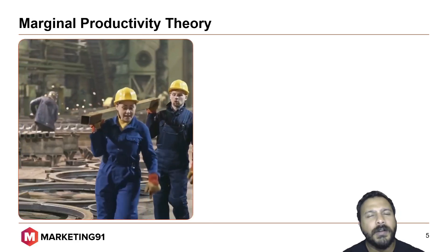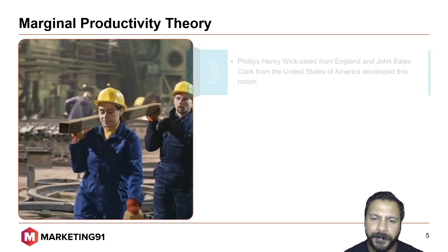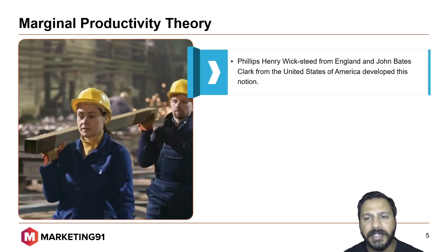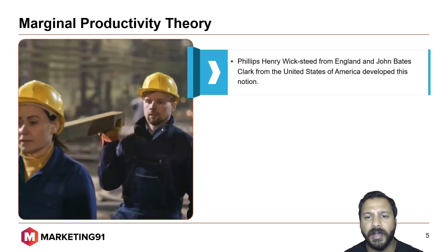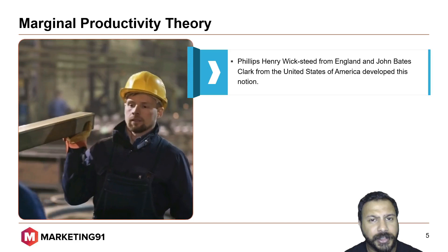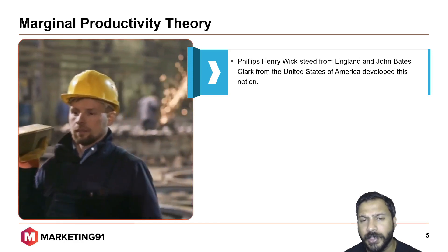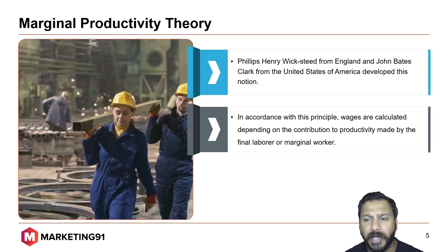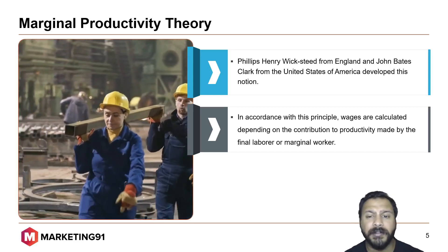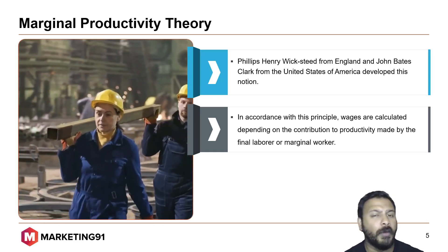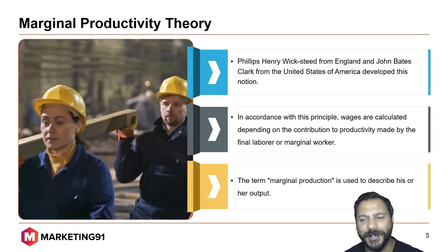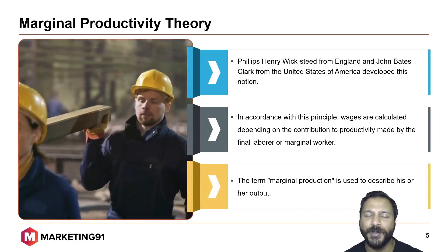Moving on to the next, the marginal productivity theory. Phillips Henry Vicks from England and John Bates Clark from the United States of America developed this notion. In accordance with this principle, wages are calculated depending on the contribution to productivity made by the final labor or marginal worker. The term marginal production is used to describe his or her output.